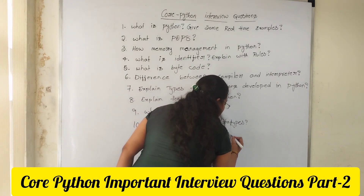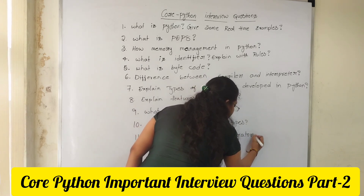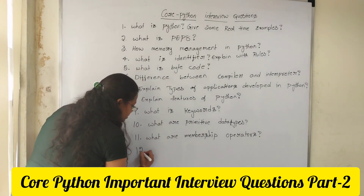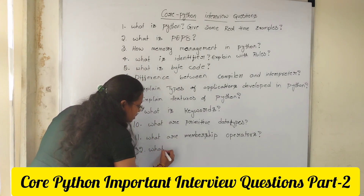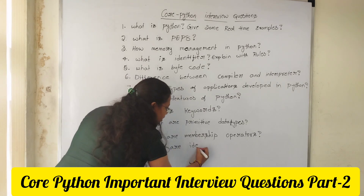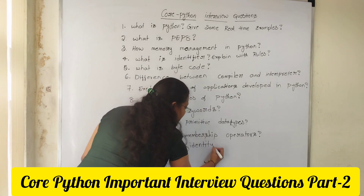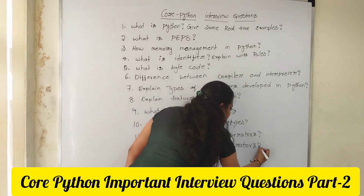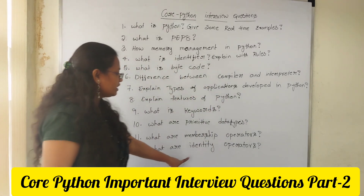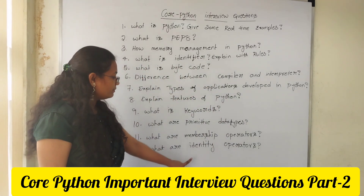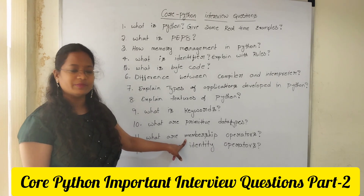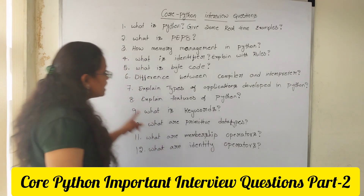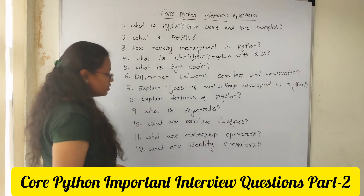What are membership operators? You need to explain with examples how we are working here. The twelfth question is: what are identity operators? Membership and identity operators are: 'is' and 'is not', 'in' and 'not in'. 'in' and 'not in' can be called membership operators, while 'is' and 'is not' are identity operators. These are the basic interview questions.